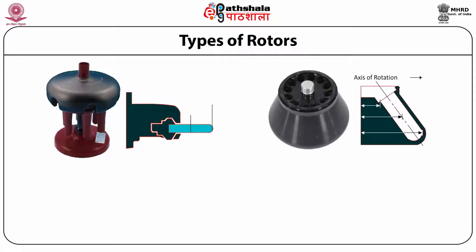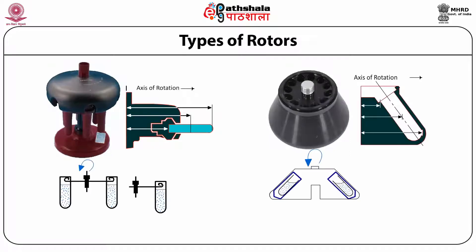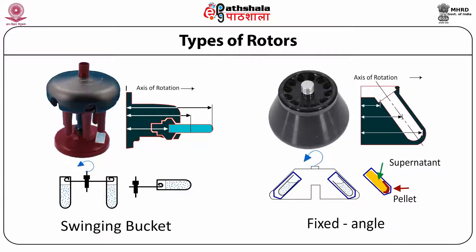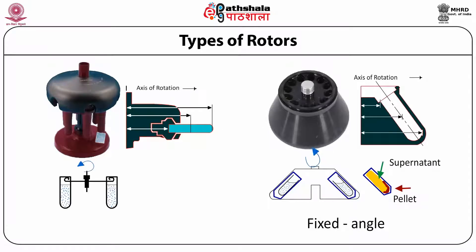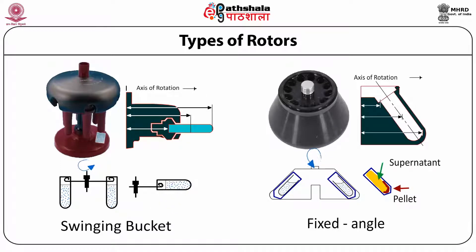There are basically two types of rotor. The first is the swinging bucket rotor — it is perpendicular to the axis at rest, but once rotating it becomes parallel to the axis of rotation. Because of the increased diameter, it is used for separation of molecules where a high radius is needed. The other type is the fixed angle rotor, the most widely used, where the angle of rotation is fixed and pellets are collected at the tip after centrifugation.